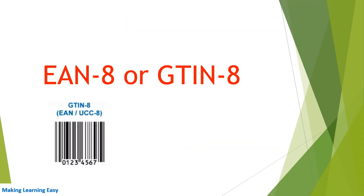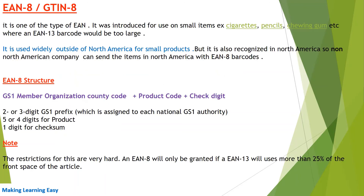Now let's see EAN-8, also known as GTIN-8. I have attached a barcode screenshot of GTIN-8 — you can see it is of eight digits. EAN-8 is one type of EAN. It was introduced for use on small items like cigarettes, pencils, and chewing gum, where an EAN-13 barcode would be too large to fit. For example, a chewing gum package is very small, making it difficult to print an EAN-13 barcode, so EAN-8 was introduced.